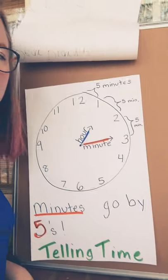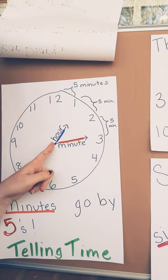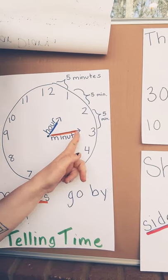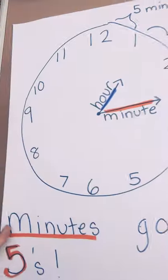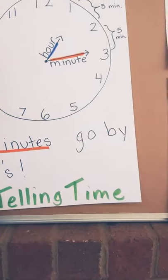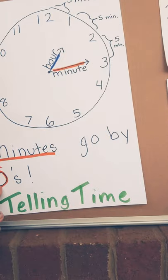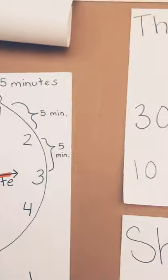So when you are telling time, there's two things that you need to know. The shorter hand is the hour hand. The longer hand is the minute hand. That's the first thing, most important thing. And the next thing that you need to know is that this is very important. Minutes go by fives.